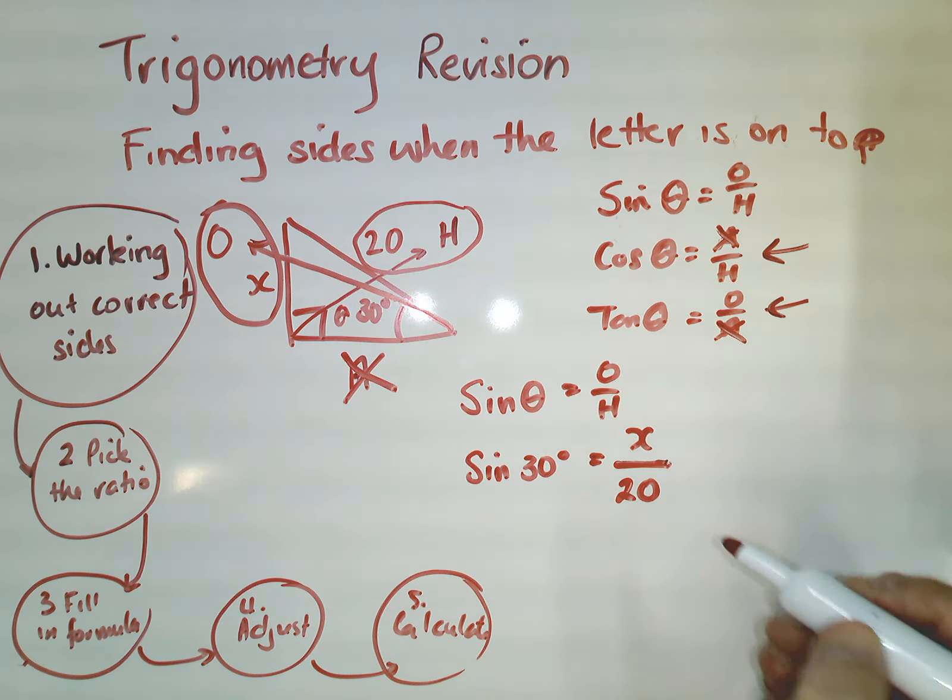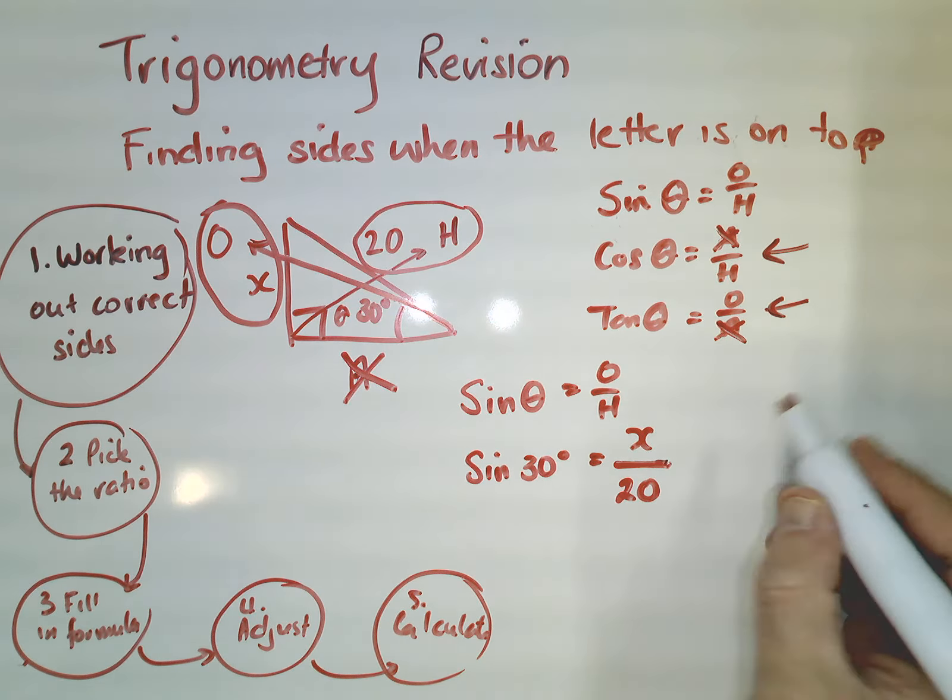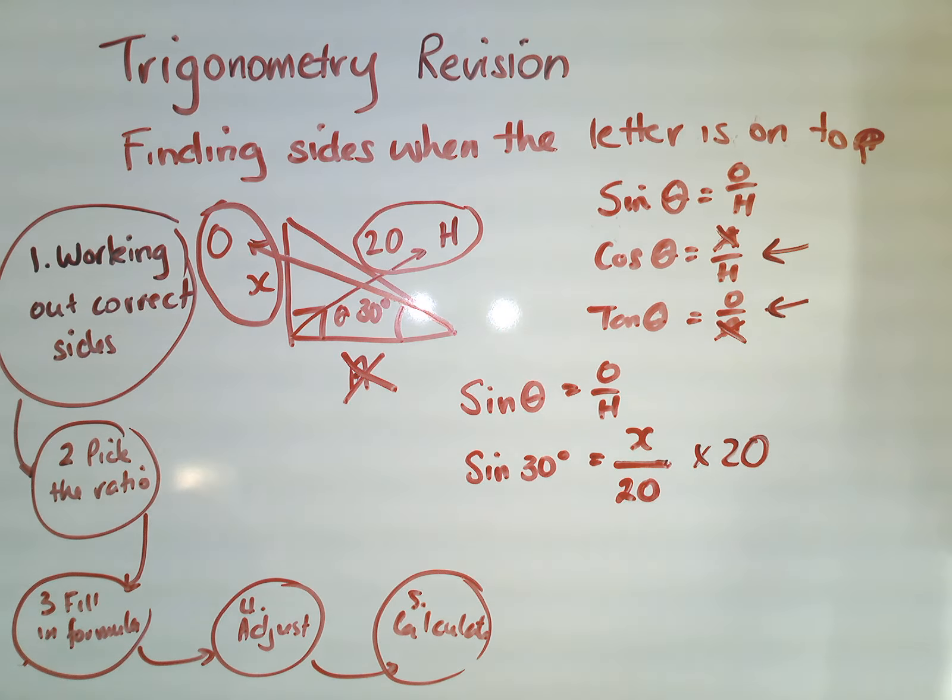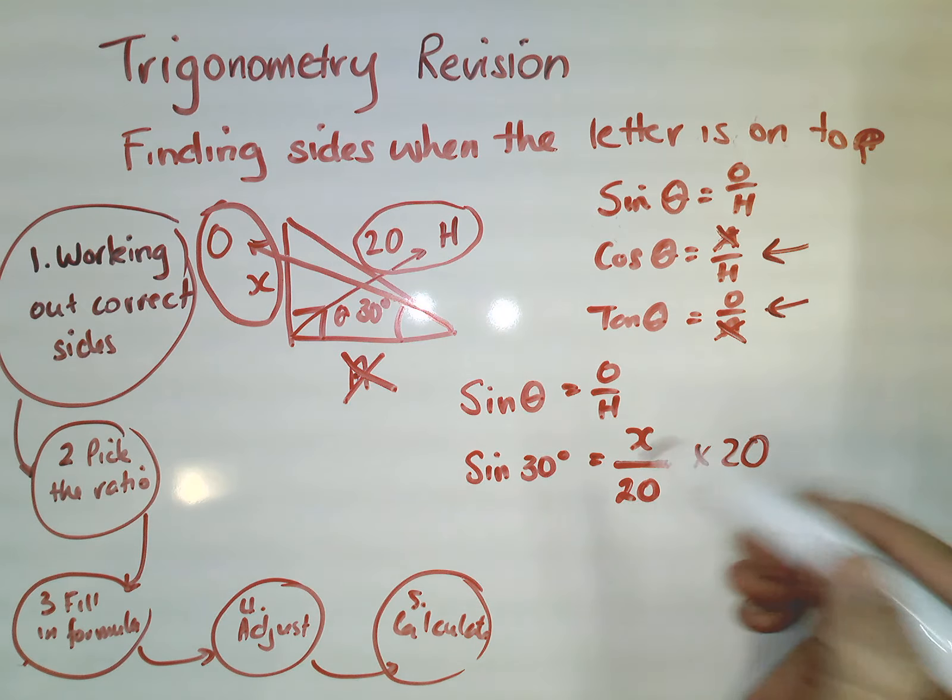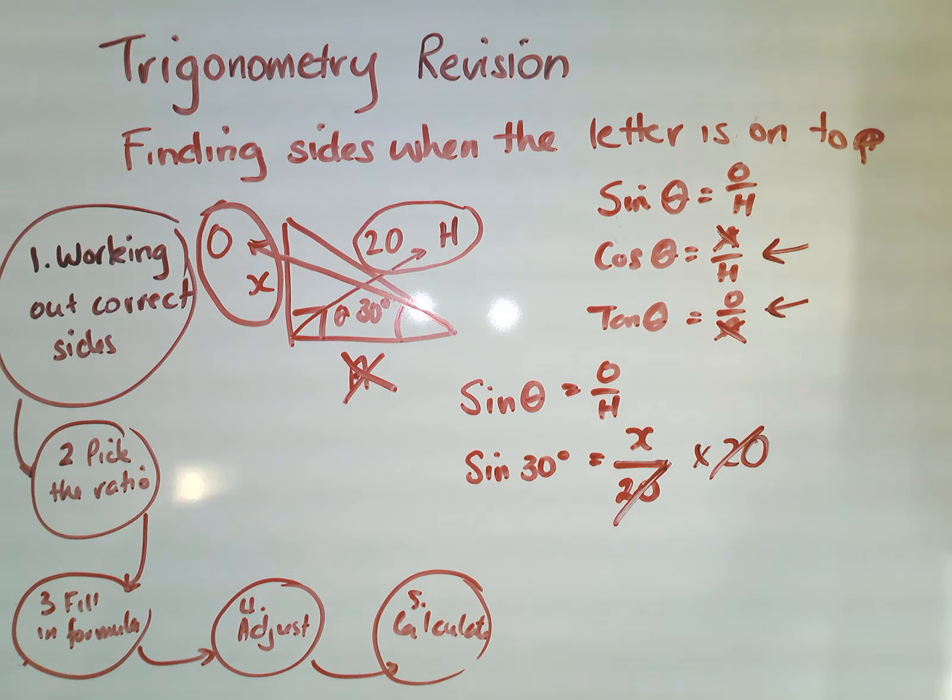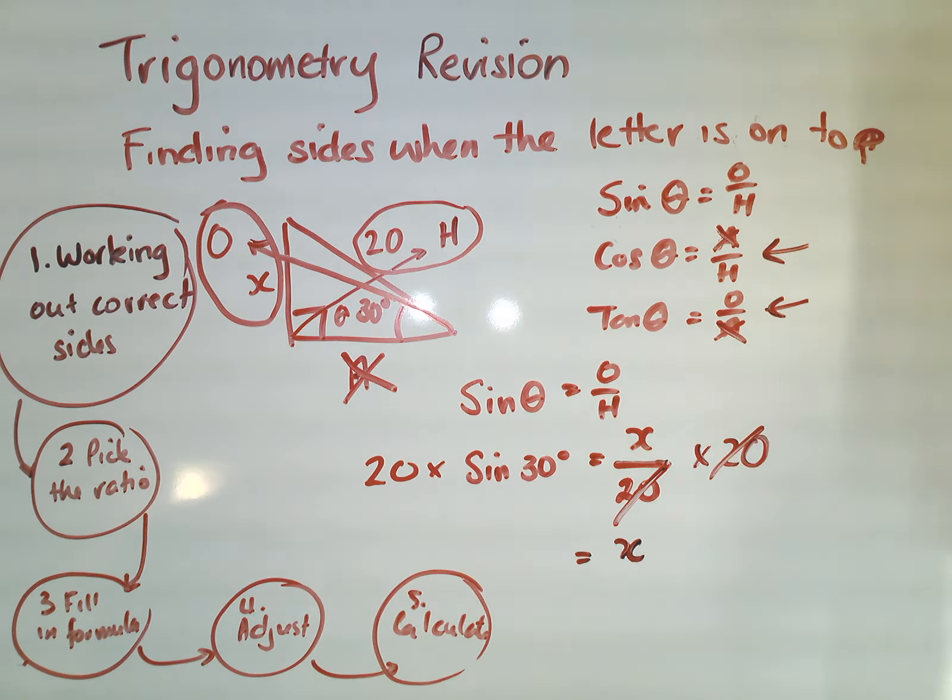So remembering that this line of course means divide, so I've got X divided by 20. So I need to do the opposite of that, so I'm actually going to times by 20. And this comes back to our linear unit that we were doing before. And of course if I divide by 20 and then times by 20, I technically don't do anything to X. So I can cancel them out, and that's gonna leave me with X on this side of the equation. Of course, if I times by 20 there, I need to times by 20 on this side.